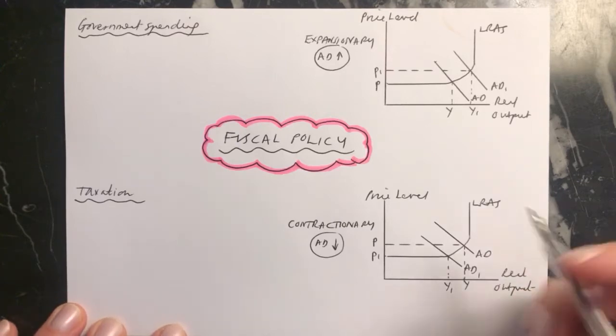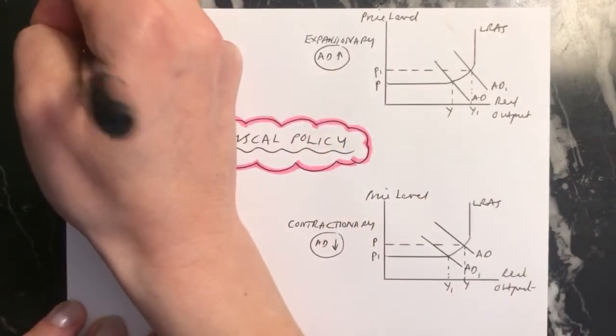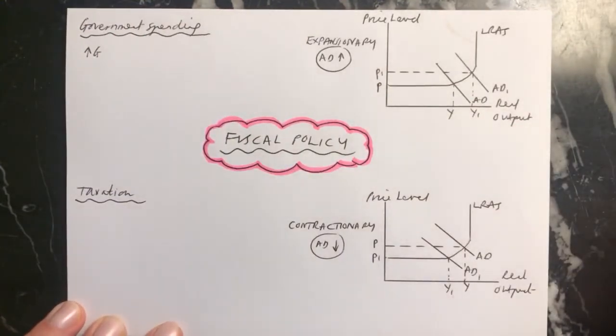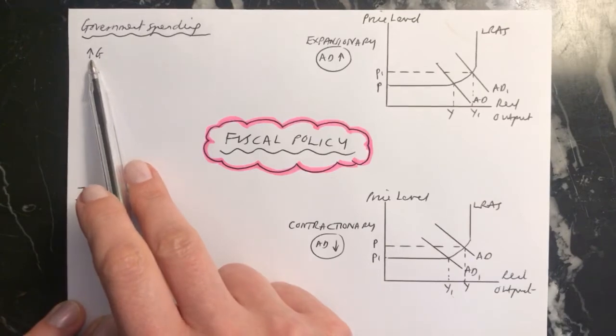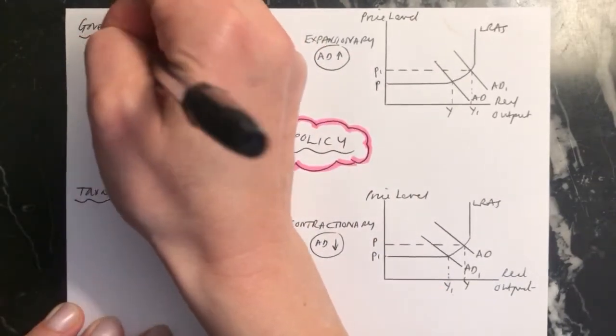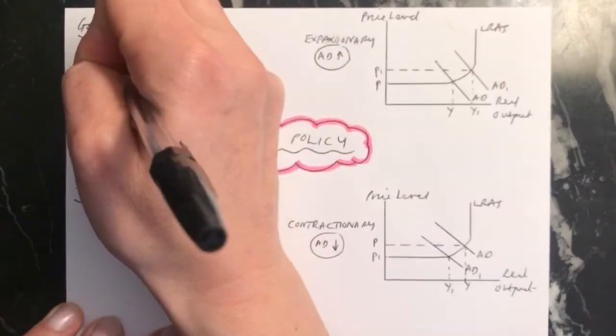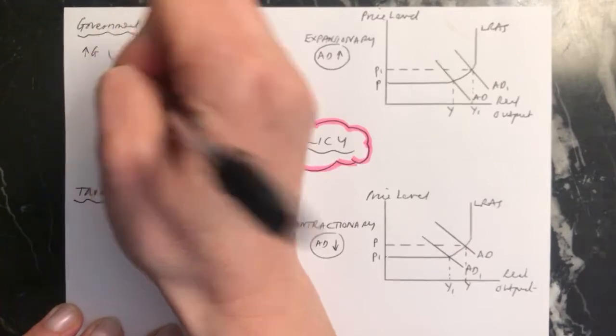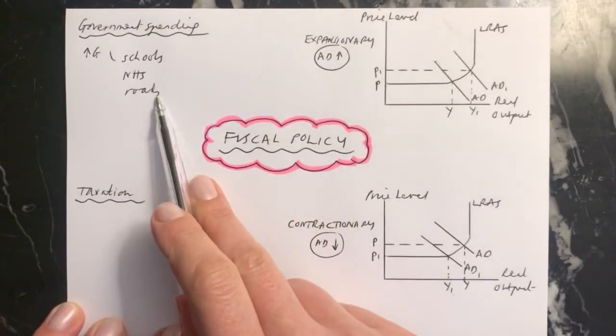An example would be if the government were to increase government spending. If they chose to do that, this is discretionary government spending, but you only learn about that next year, so don't worry at the moment. But if they chose to increase government spending, for example, if they spent money on schools and the NHS and roads, any of those things where the government is spending,